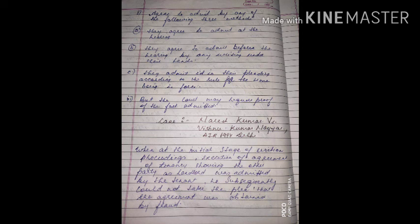He subsequently could not take the plea that the agreement was obtained by fraud. There is another case, Emperor vs. Bansilal Gangaram Vani, in which it was said that Section 58 was not initially applicable in criminal cases, but it has been made applicable by the High Court of Bombay in that case. From this case it is clear that Section 58 is admissible in criminal cases also.